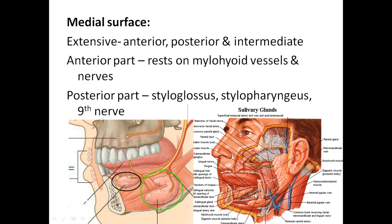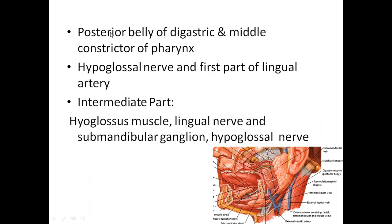The most important part is the intermediate portion of the medial surface. It is related to the posterior belly of digastric, the middle constrictor of the pharynx, and the hypoglossal nerve. Additionally, the first part of the lingual artery and the hyoglossus muscle — one of the muscles going to the tongue — are also related to this intermediate portion.